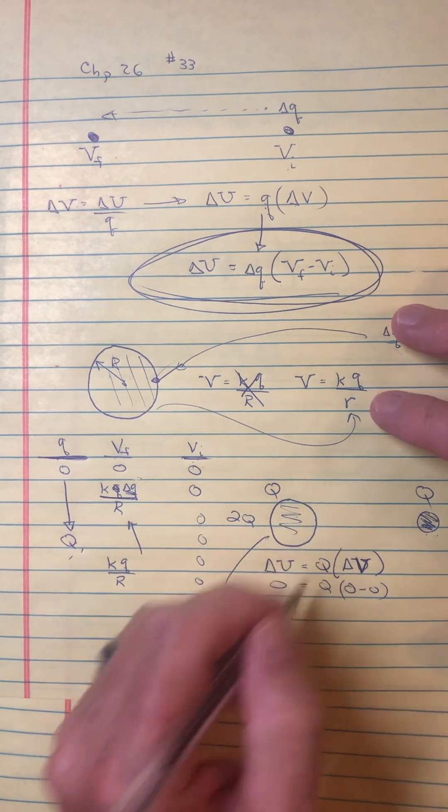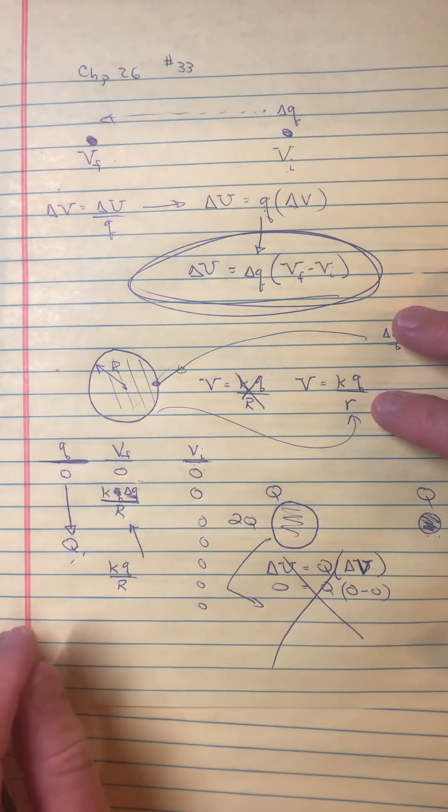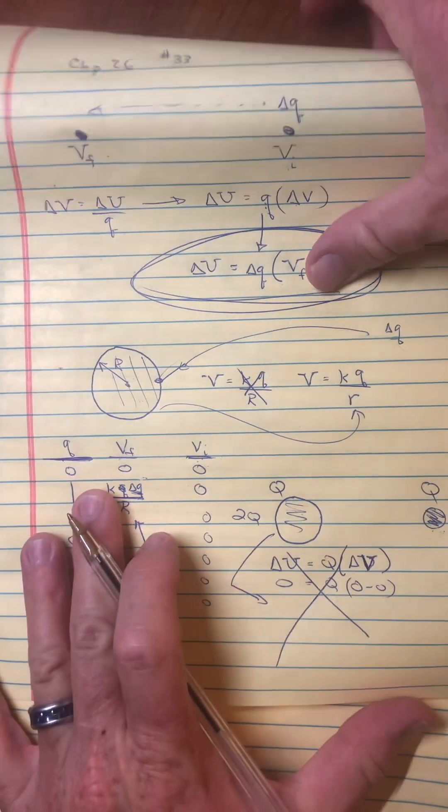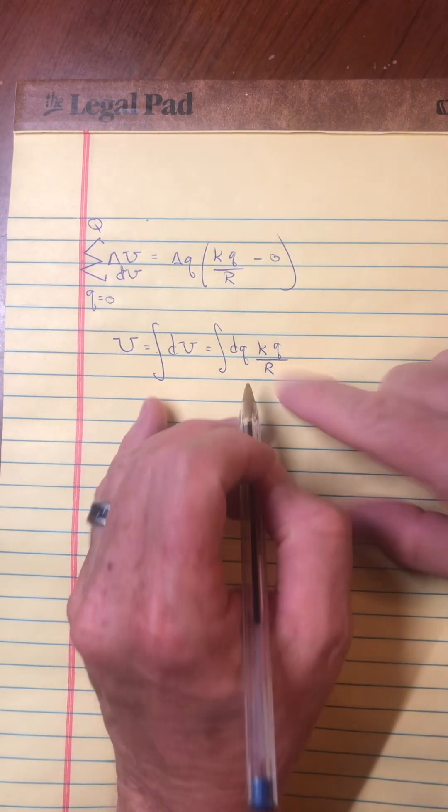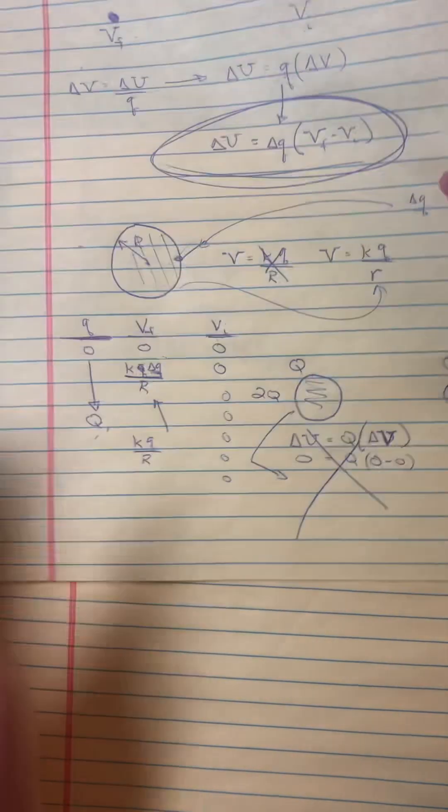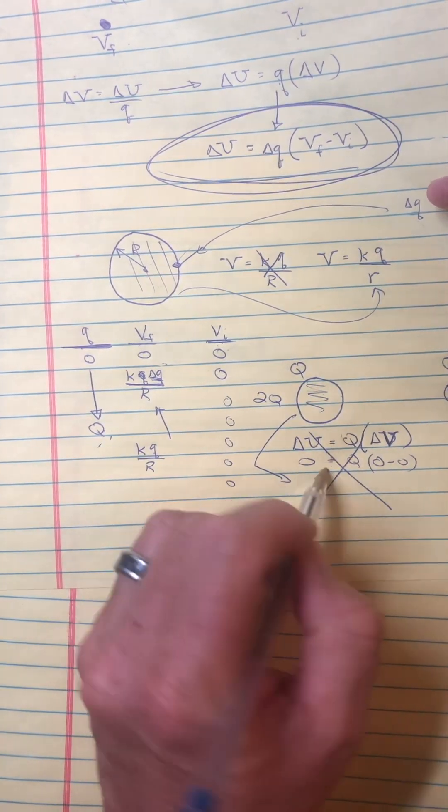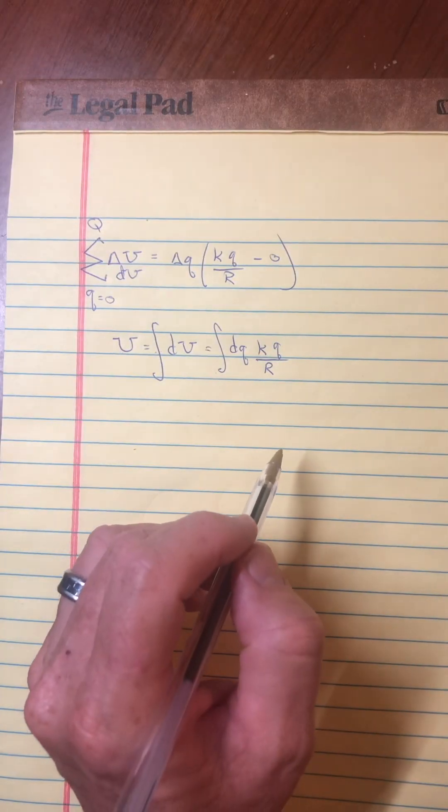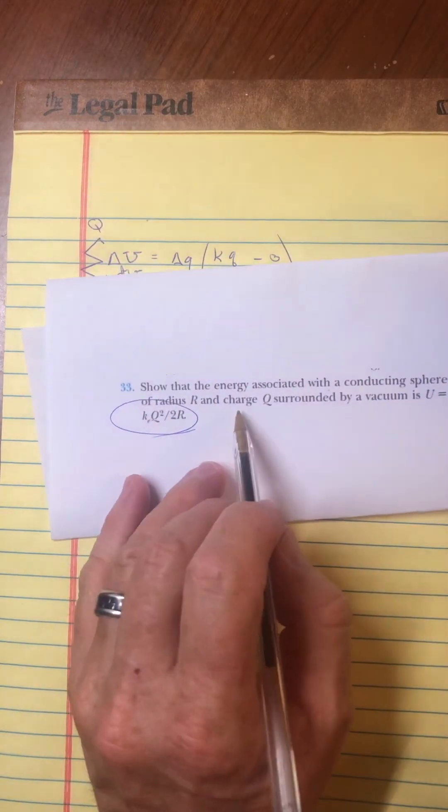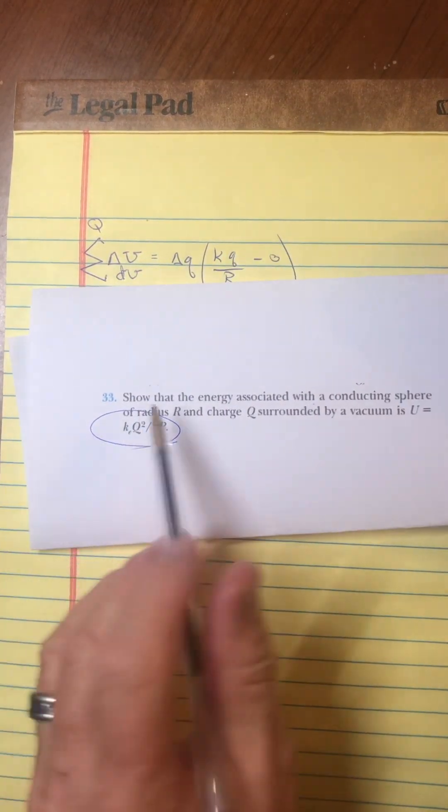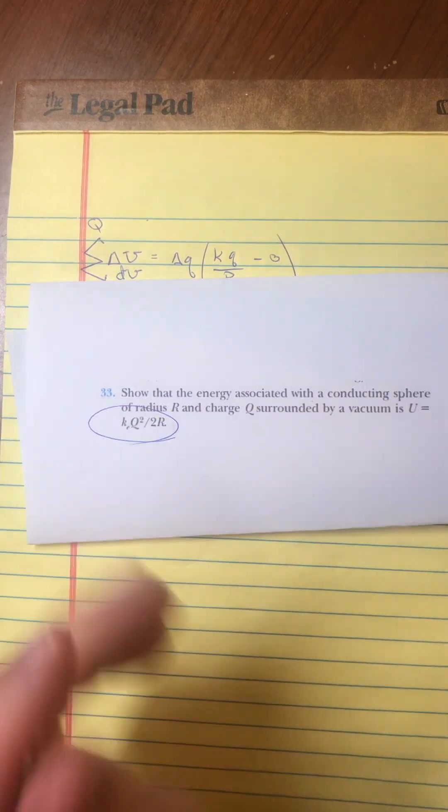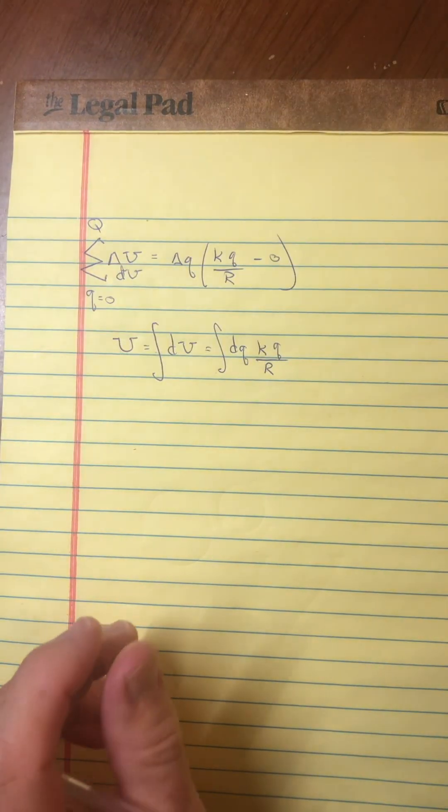So if you did that, it would just be wrong, it wouldn't be the right number. Keeping that in mind, this is what they're asking us to do. But I can really see how you could actually do this math thinking that you are doing what they asked, but you're not. They're saying how much energy does it take to assemble this all together. Show that the energy is associated with the conducting sphere. So you put it all together from nothing.